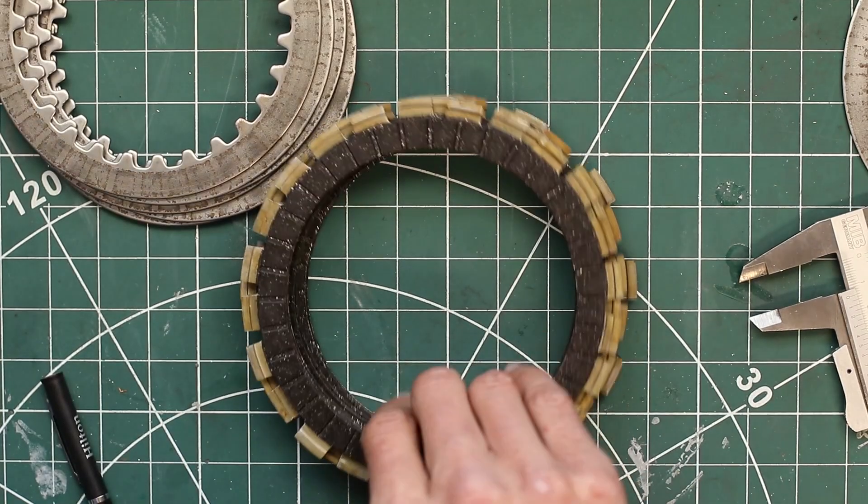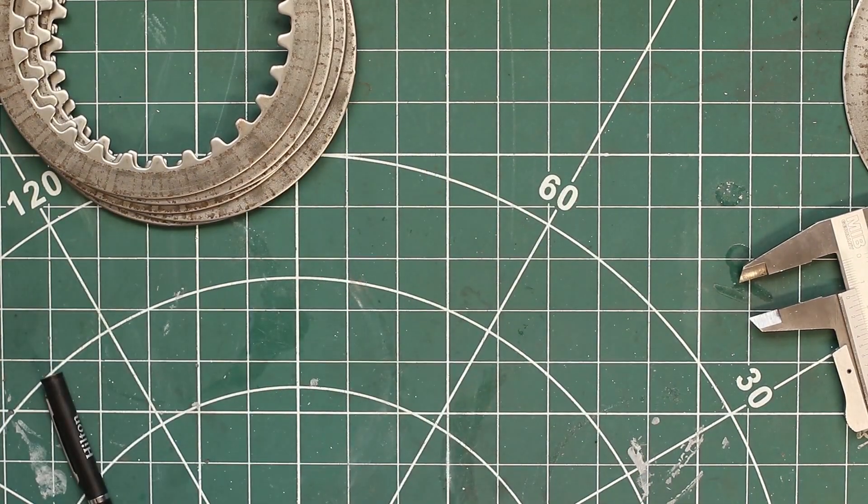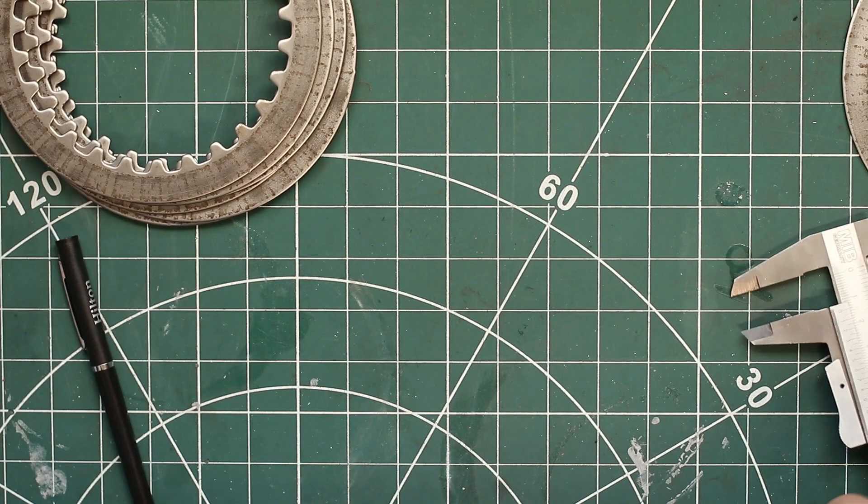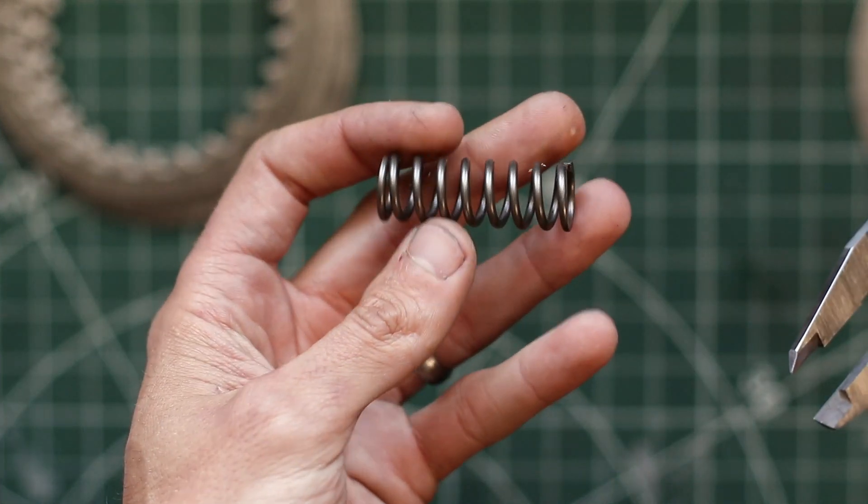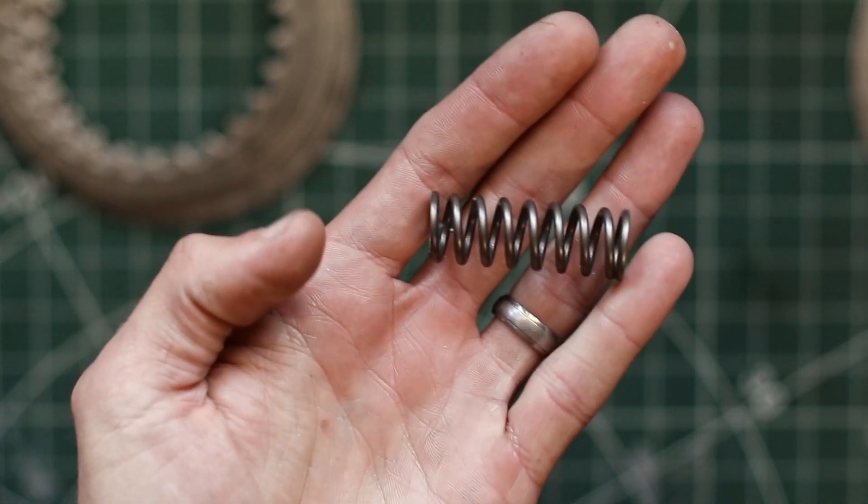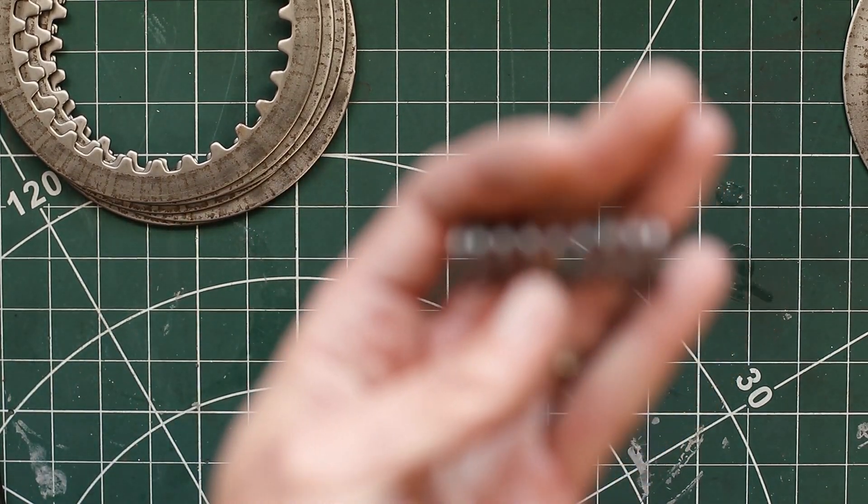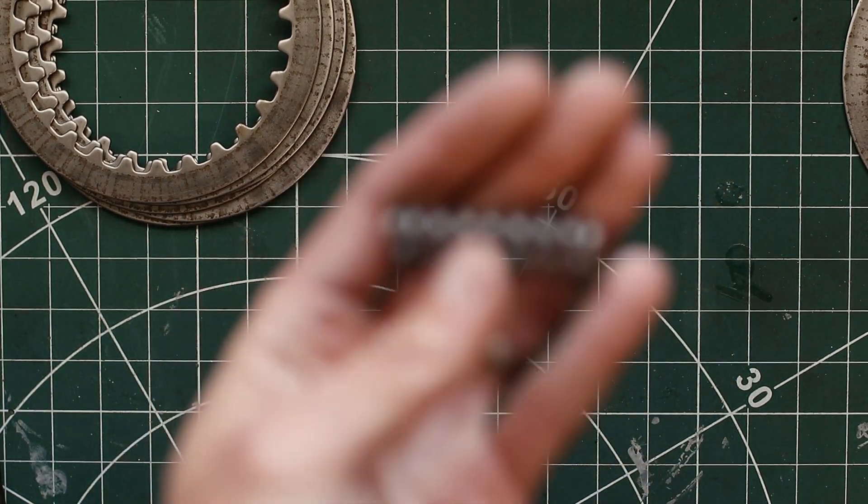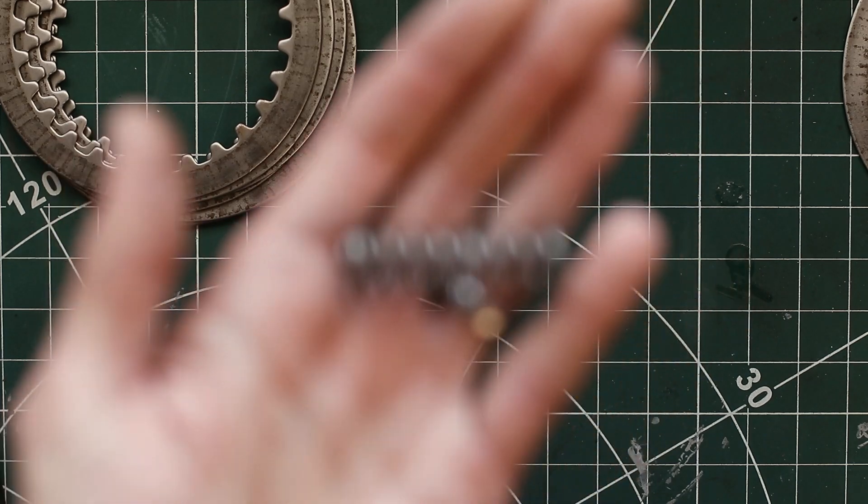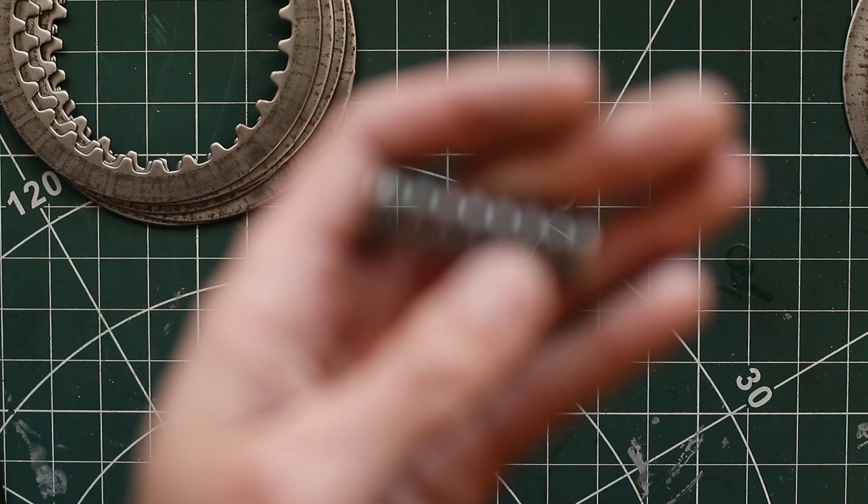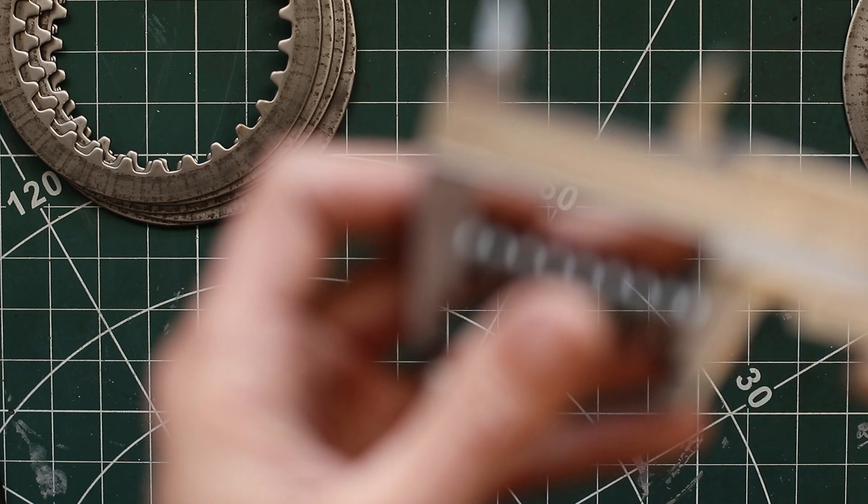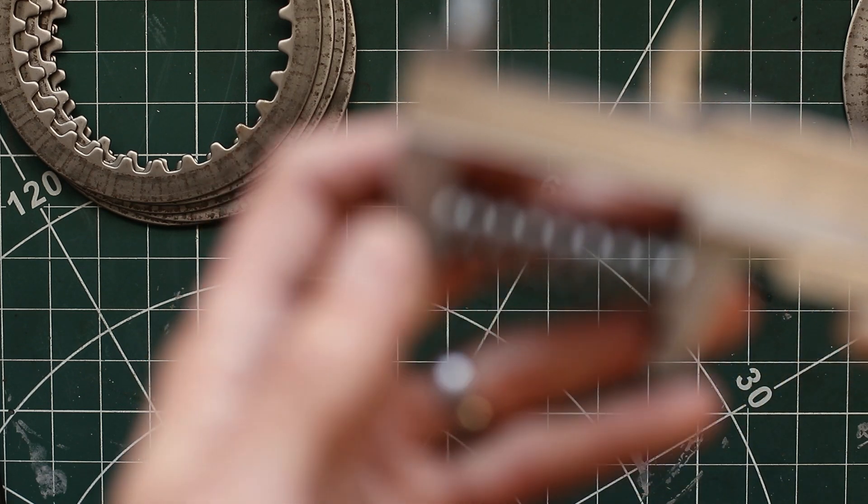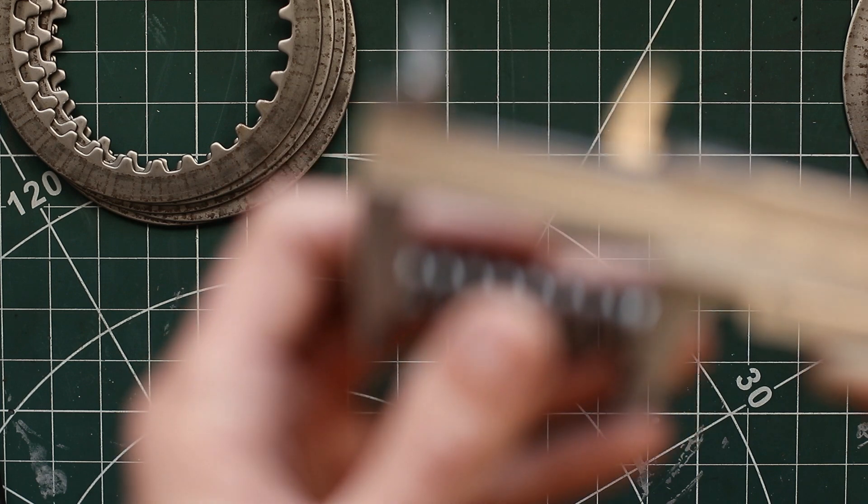So now let's measure the springs. The way we do that is free length, which means when the spring is not compressed. What we're looking for is 47.5 millimeter, that's our absolute limit, so anything below that goes in the bin.